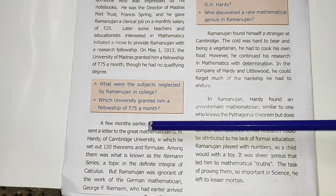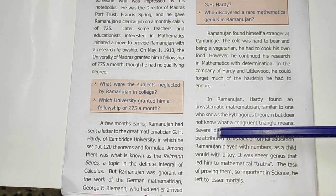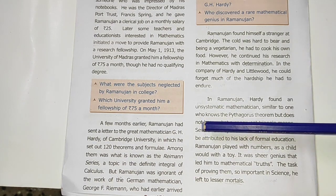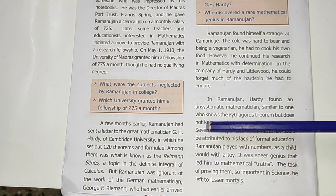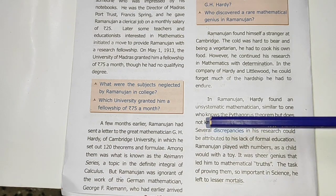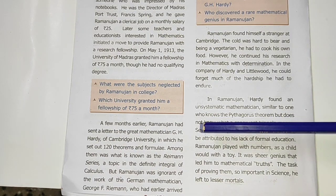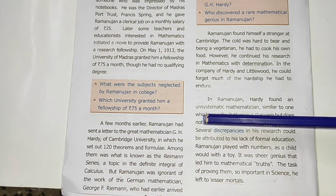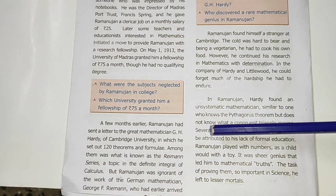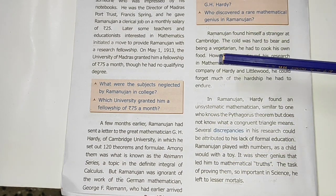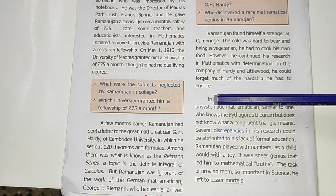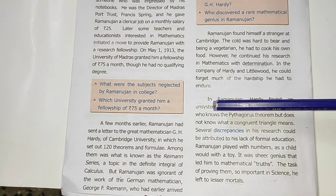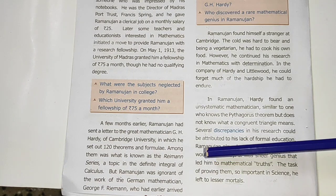Within months, Ramanujan sent a letter to the great mathematician G.H. Hardy of Cambridge University, in which he set out 120 theorems and formulas, including the Ramanujan series. Hardy and his colleague Littlewood realized they had discovered a rare mathematical genius and invited him to Britain.